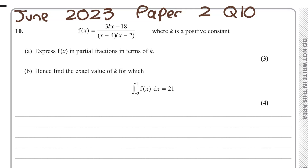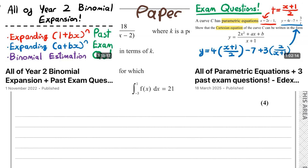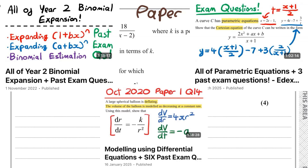One thing that's good about sitting Paper 1 is you can narrow down what is going to be on Paper 2 by the topics they didn't ask in the first paper. You still need to revise everything, but a couple of topics that didn't come up in Paper 1: binomial expansion didn't come up, so they will definitely ask a question about that in Paper 2. Parametrics didn't come up at all, so they will definitely ask at least one question on that. Differential equations didn't come up either — they have asked a question on differential equations every single year from 2018 to 2024, so I'm almost certain they're going to ask a question about it on the second paper.